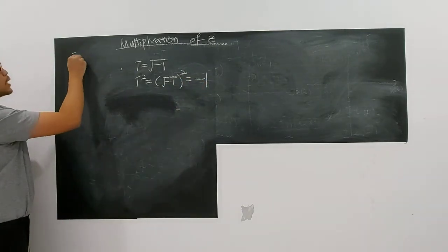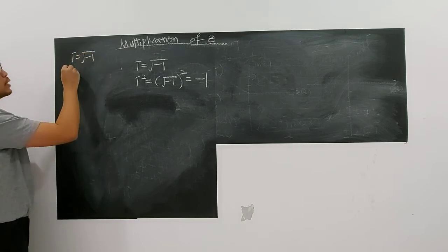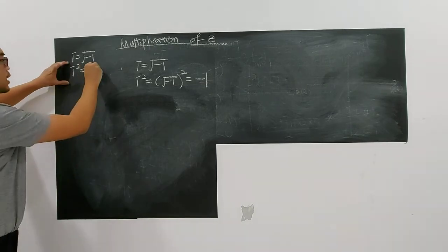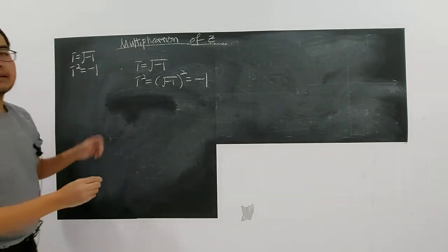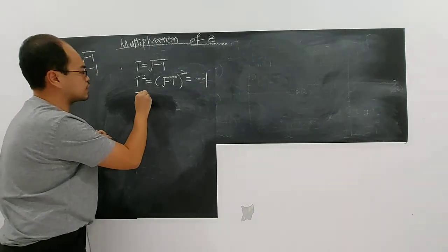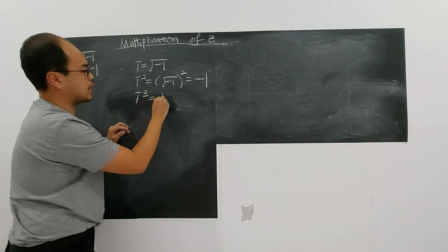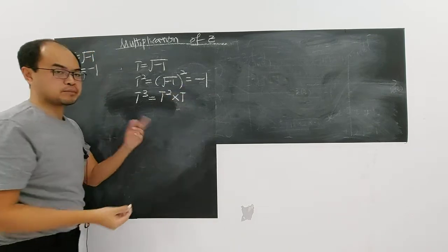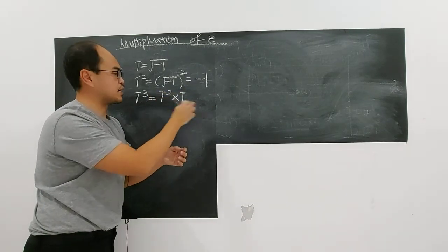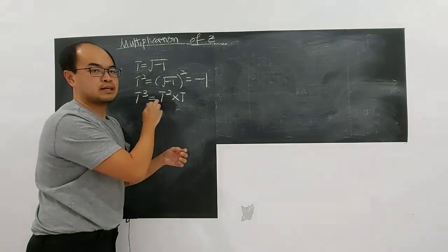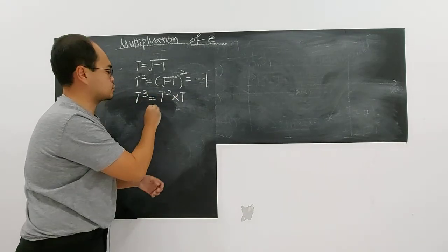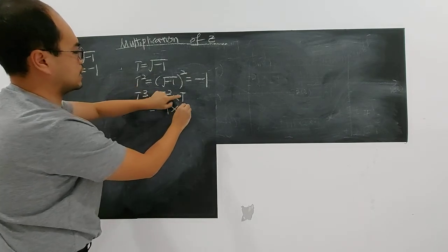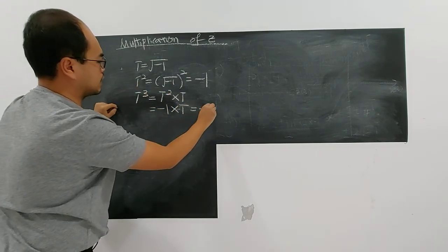So now you know that i is the square root of negative one, and i squared is negative one. Let's play around. What is i cubed? i cubed is i squared times i — by index law, two plus one is three. So i squared is negative one, times i, you get negative i.